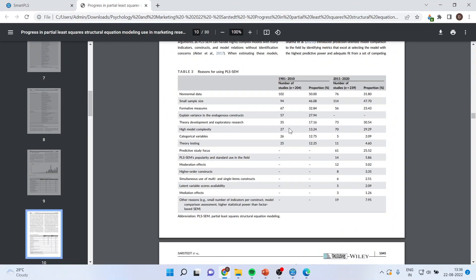Moreover, you can see the number of studies published on non-normal data in the time period 1981 to 2010: 102, and in the last decade, 2011 to 2020: 76 studies. 94 studies were on small samples in 1981 to 2010. You can see the amount is increasing. These are the basic reasons why people have started using more and more PLS-SEM.